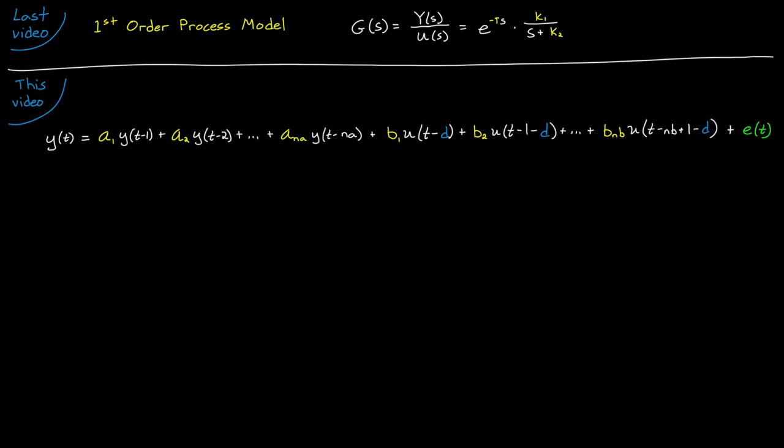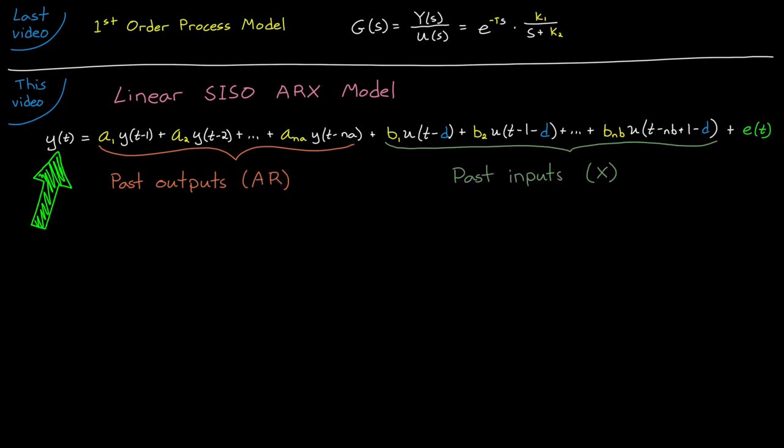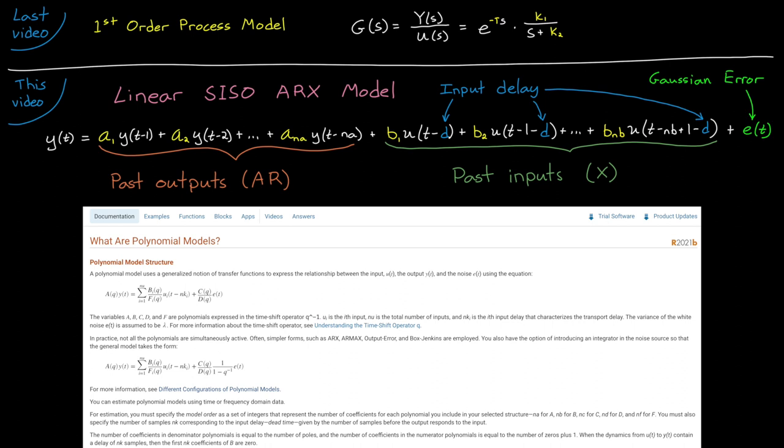This is a linear, single input, single output ARX model. ARX stands for autoregressive plus exogenous inputs, which basically means the output is a function of past outputs (autoregressive) and also a function of external inputs or exogenous inputs. There's also a possible input delay and this term to model Gaussian errors. ARX models are a subset of a larger class of polynomial models.